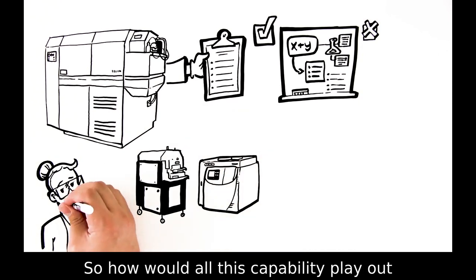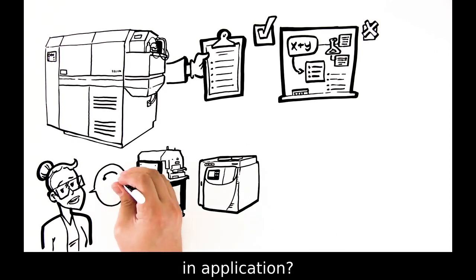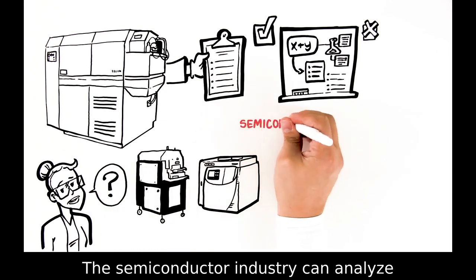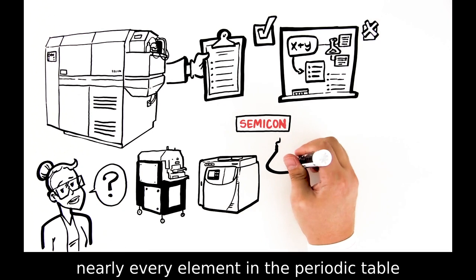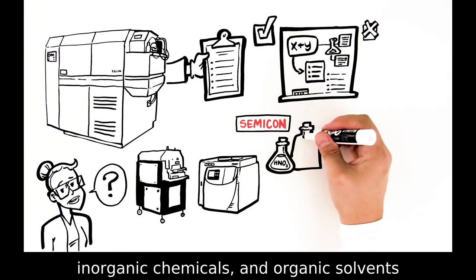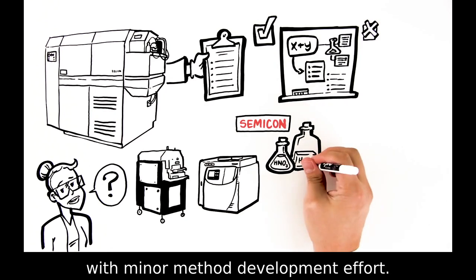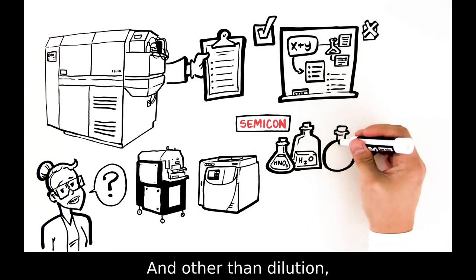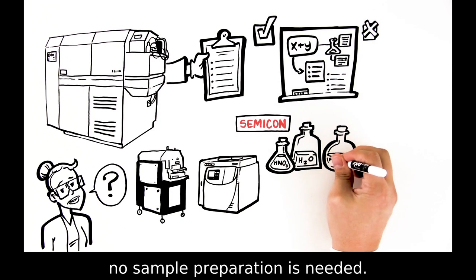So how would all this capability play out in application? The semiconductor industry can analyze nearly every element in the periodic table in ultra-pure water, mineral acids, inorganic chemicals, and organic solvents, with minor method development effort. And other than dilution, no sample preparation is needed.